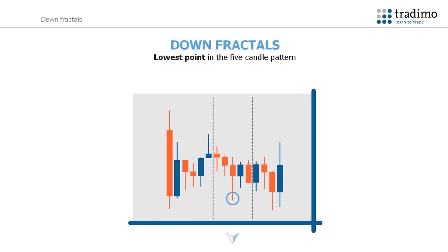A down fractal is the opposite to an up fractal, in that it is formed when the middle candle is the lowest point in the five candle pattern. There are two candles on the left hand side with lows higher than the centre candle's lows, and two candles on the right hand side with lows also higher than the centre candle's lows.